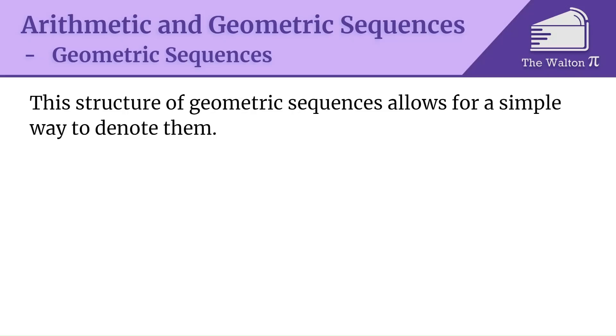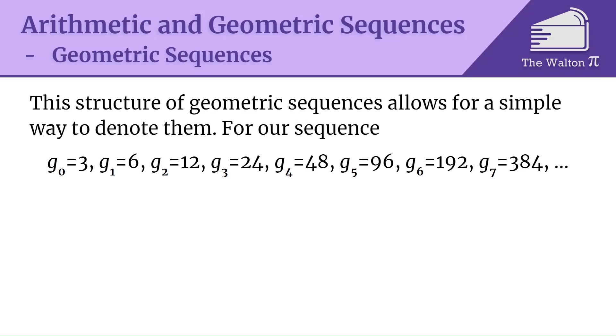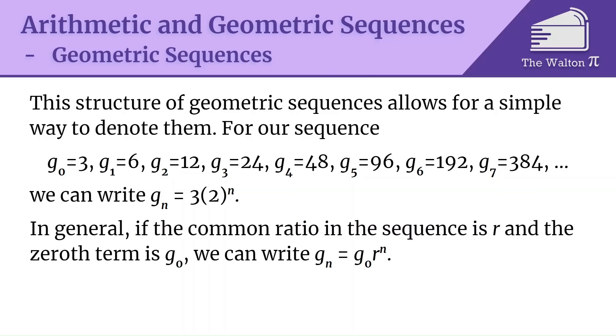The structure of geometric sequences with this common ratio allows for a very simple way to denote them. For our sequence g0 is 3, g1 is 6, and so on, we can write g_n is 3 times 2 to the n. In general, if our common ratio in the sequence is r and the 0th term is g0, we can write g_n is g0 times r to the n. Or alternatively, similarly to how we had an alternate form for arithmetic sequences, we can write g_n is g_k times r to the (n-k). So using our g_n is g0 times r to the n, g0 is 3, our common ratio is 2, so our sequence is 3 times 2 to the n.